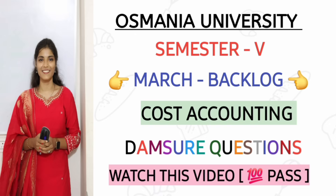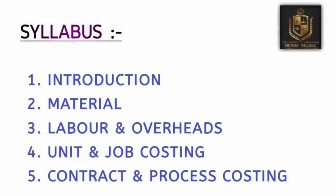There are a total of five units. Unit one is Introduction, unit two is Material, and in unit three there are two chapters: Labor and Overheads. Unit four covers Unit Costing and Job Costing, and unit five covers Contract Costing and Process Costing. The third, fourth, and fifth units each have two chapters.